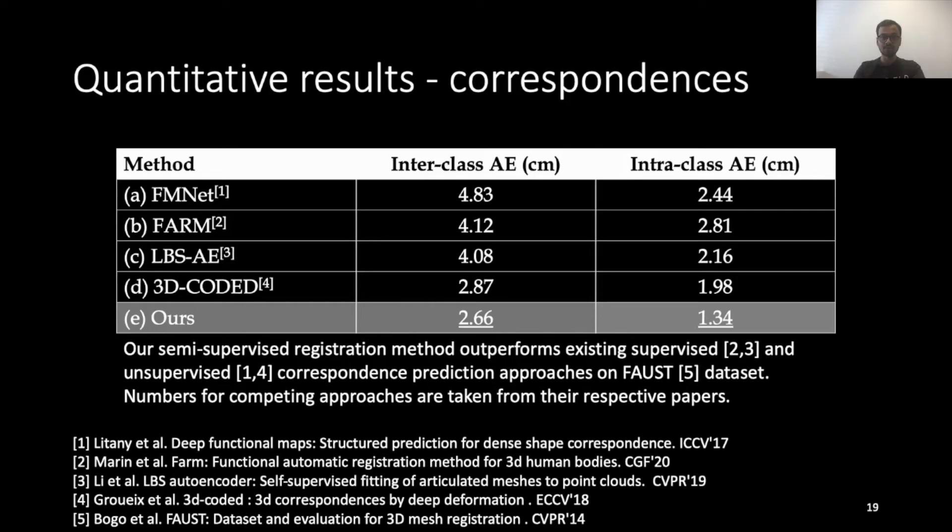We also evaluate LoopReg on the task of correspondence prediction. LoopReg is not explicitly trained for predicting correspondences between two shapes. But since we can register different human meshes with a common template, we can establish correspondences between the different shapes. Our method outperforms existing baselines on correspondence prediction on Faust dataset.